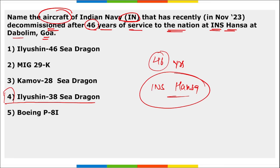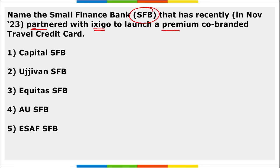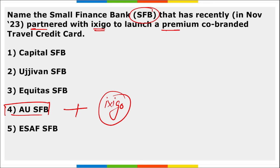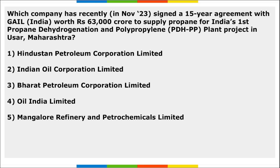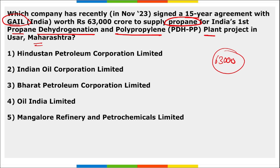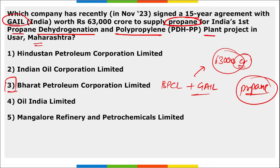AU Small Finance Bank partnered with travel platform Ixigo to launch a premium Ixigo AU co-branded credit card aimed at enhancing travel experience for urban travelers. Bharat Petroleum Corporation Limited (BPCL) signed a 15-year agreement with GAIL worth 63,000 crore rupees to supply propane for India's first propane dehydrogenation and polypropylene plant project located in Uran, Maharashtra.